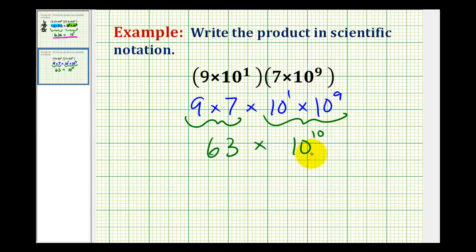While this is the correct product, it's not in the correct form. For a number to be written in scientific notation correctly, this number here has to be greater than or equal to 1 and less than 10. So this number here is too large to be in the correct form for scientific notation. So what we'll do is convert this to scientific notation and then multiply it with 10 to the tenth.